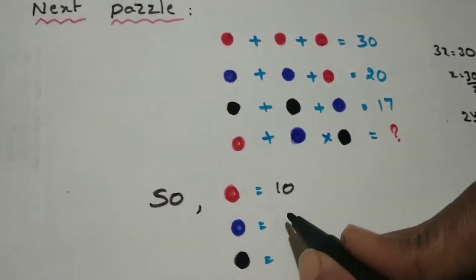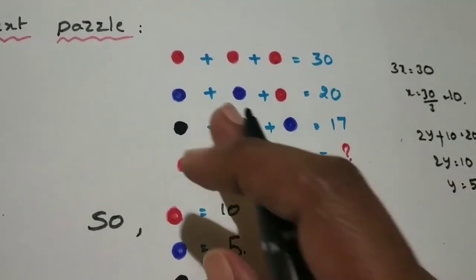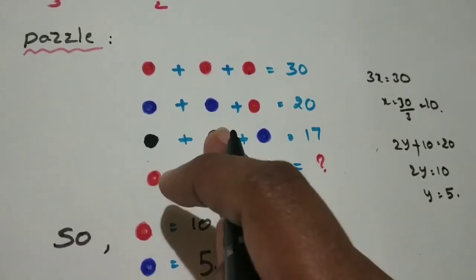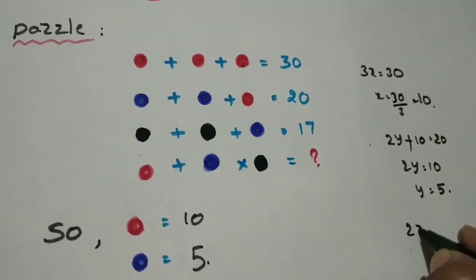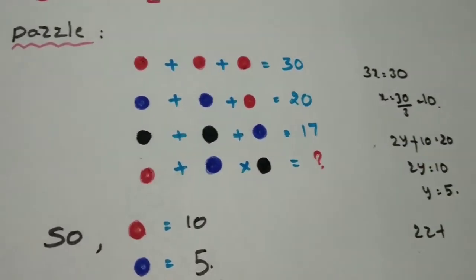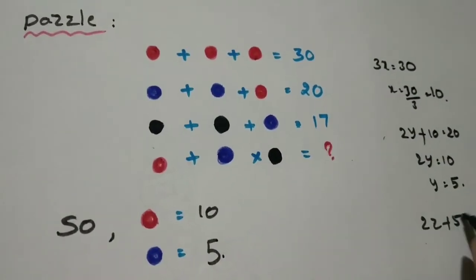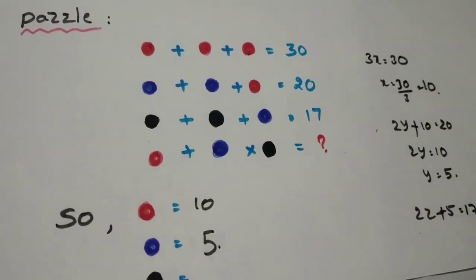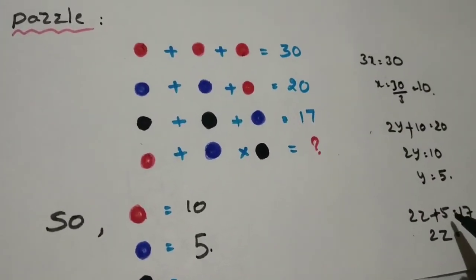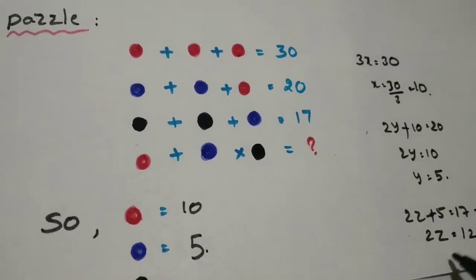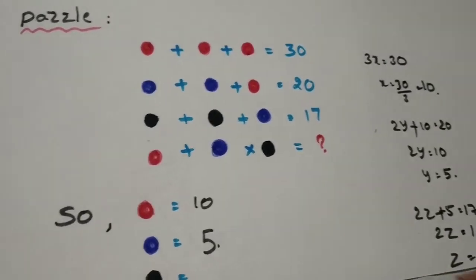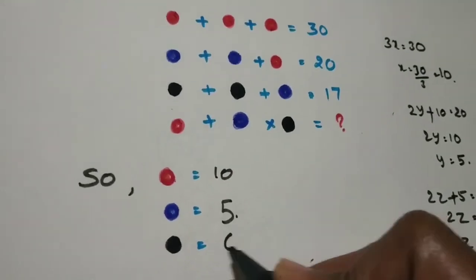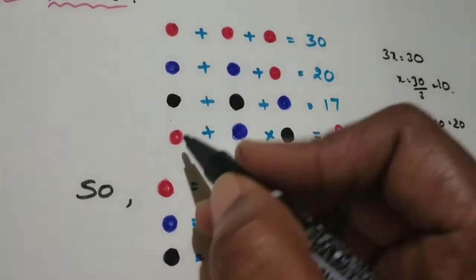Now black dot you have to find. Black dot here, let it be z. Two dots are there, z plus z, 2z plus blue dot. Blue dot value is how much we got? 5. So 2z plus 5 is equal to 17 they given. So 2z is equal to 17 minus 5, 12. Then z is equal to 6. Black colored dot, how much you got? 6.